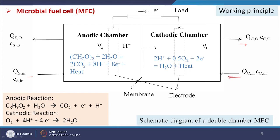The anodic reactions for a generalized organic compound: CₓHᵧOz plus H₂O gives CO₂ plus electrons plus H⁺. The cathodic reaction: O₂ plus 4H⁺ plus 4e⁻ gives 2H₂O. These reactions take place in the anodic and cathodic chambers of the MFC. In the anodic chamber the reactions must be catalyzed by microorganisms; in the cathodic chamber microbes may or may not be present.